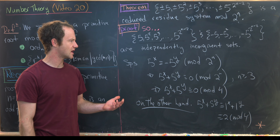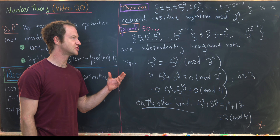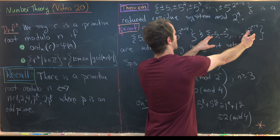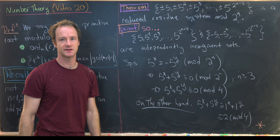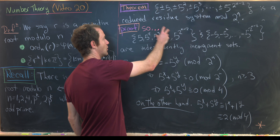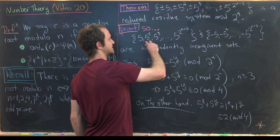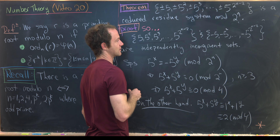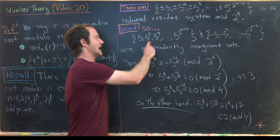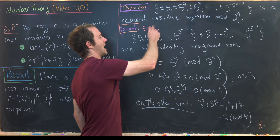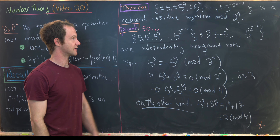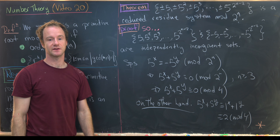We contradicted the possibility of an element from the positive set being congruent to one from the negative set. So elements within each set are incongruent, and elements across the two sets are also incongruent. This finishes the proof of the theorem.